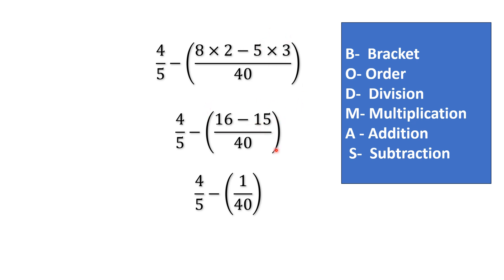So after the subtraction we can get 1 by 40. Now since there is no other operation inside the bracket so we can just remove the bracket and write it like this 4 over 5 minus 1 over 40.